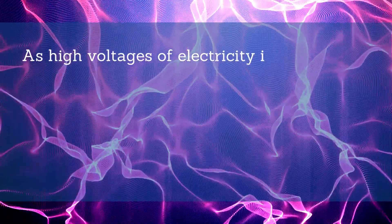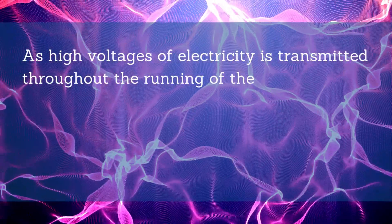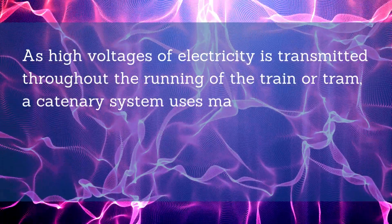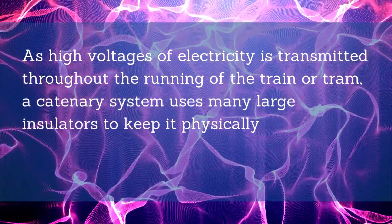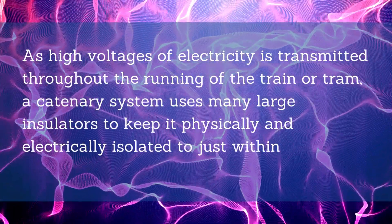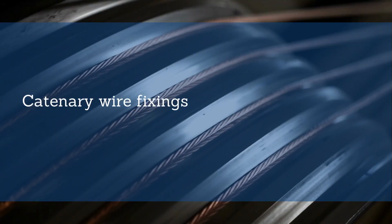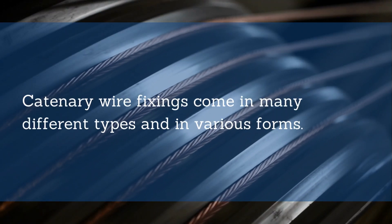As high voltages of electricity are transmitted throughout the running of the train or tram, a catenary system uses many large insulators to keep it physically and electrically isolated to just within the system. Catenary wire fixings come in many different types and in various forms.